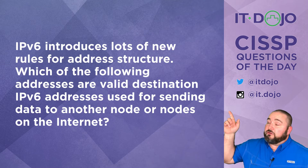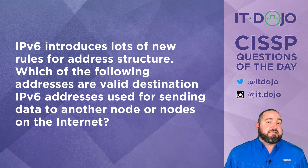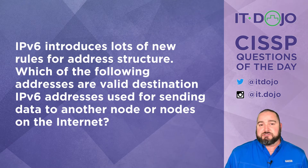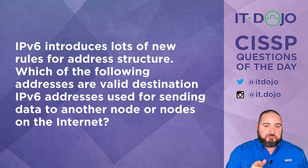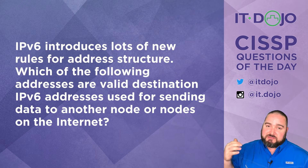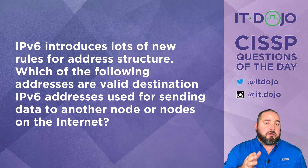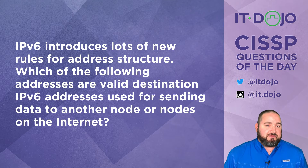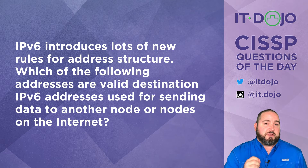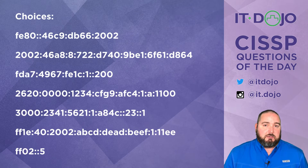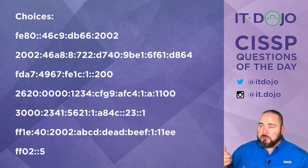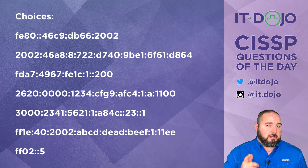Question number one today: IP version 6 introduces a lot of different rules for IP address structure. Given this list of IPv6 addresses, which of them is a valid destination IPv6 address for sending traffic to a node or nodes on the internet? Go ahead and click pause, look at those closely, and then when you're ready click play and we'll break it all down.